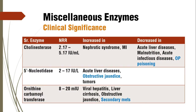This is our table. We will find different miscellaneous enzymes here, and we will find conditions where each is increased and decreased. The normal reference ranges are given here, but we are not going to discuss those. We will discuss the peculiar conditions in which they are increased or decreased.